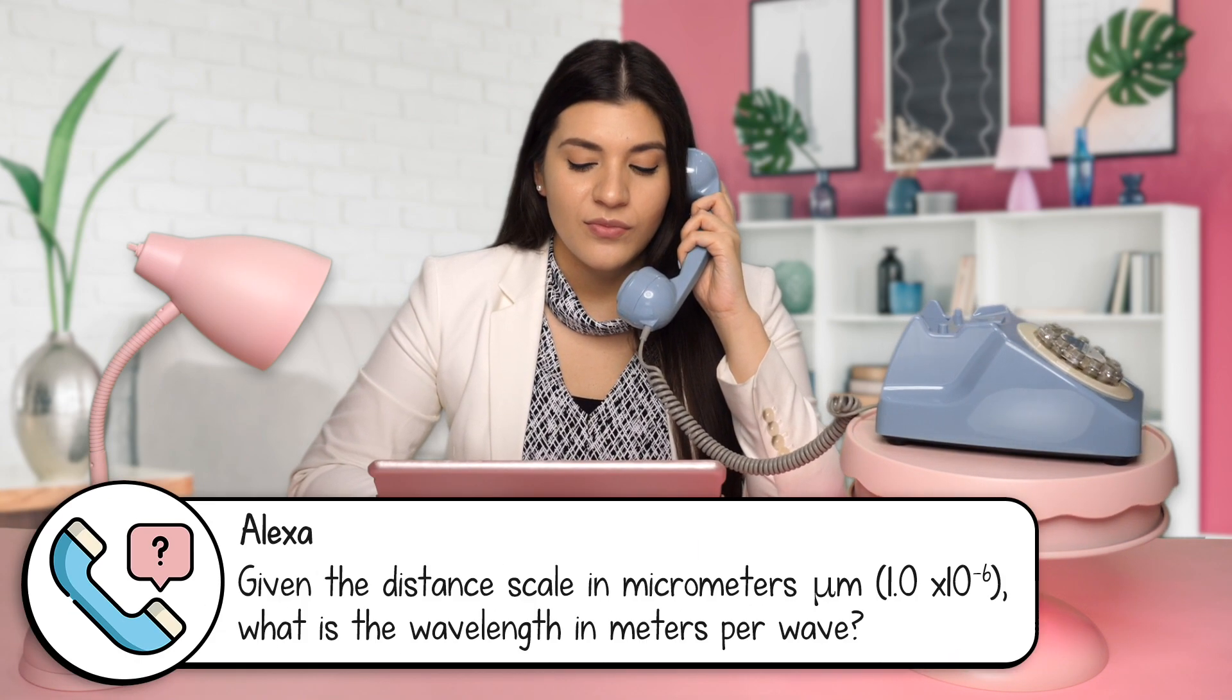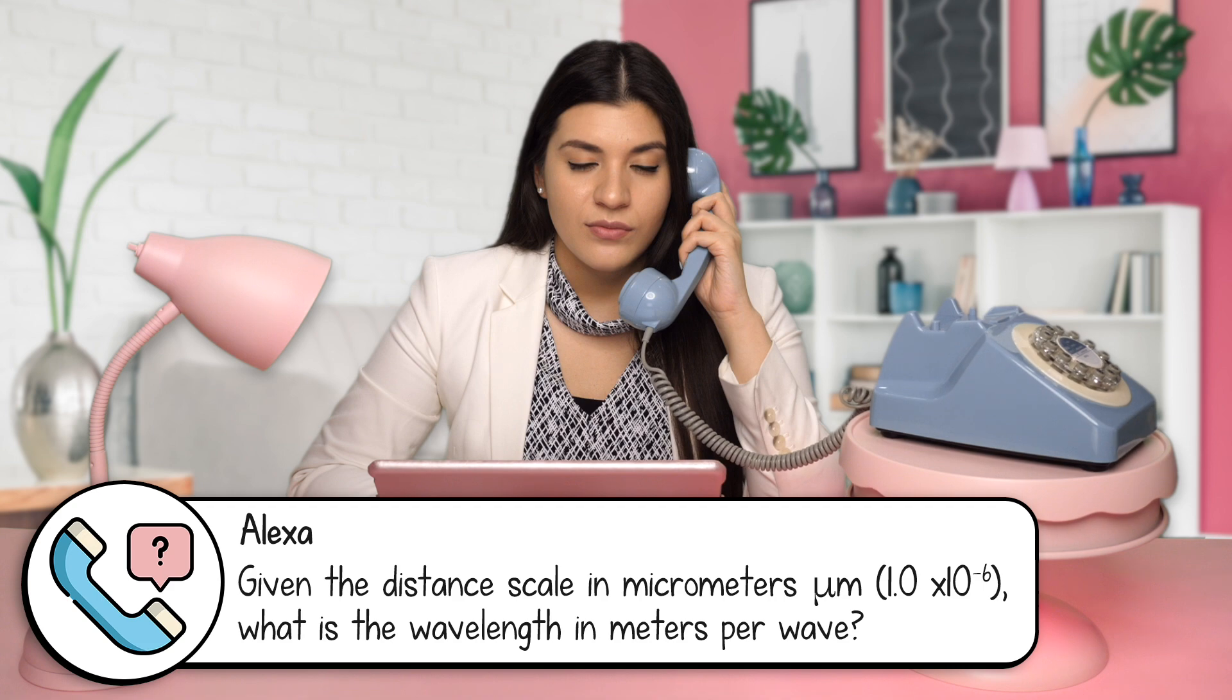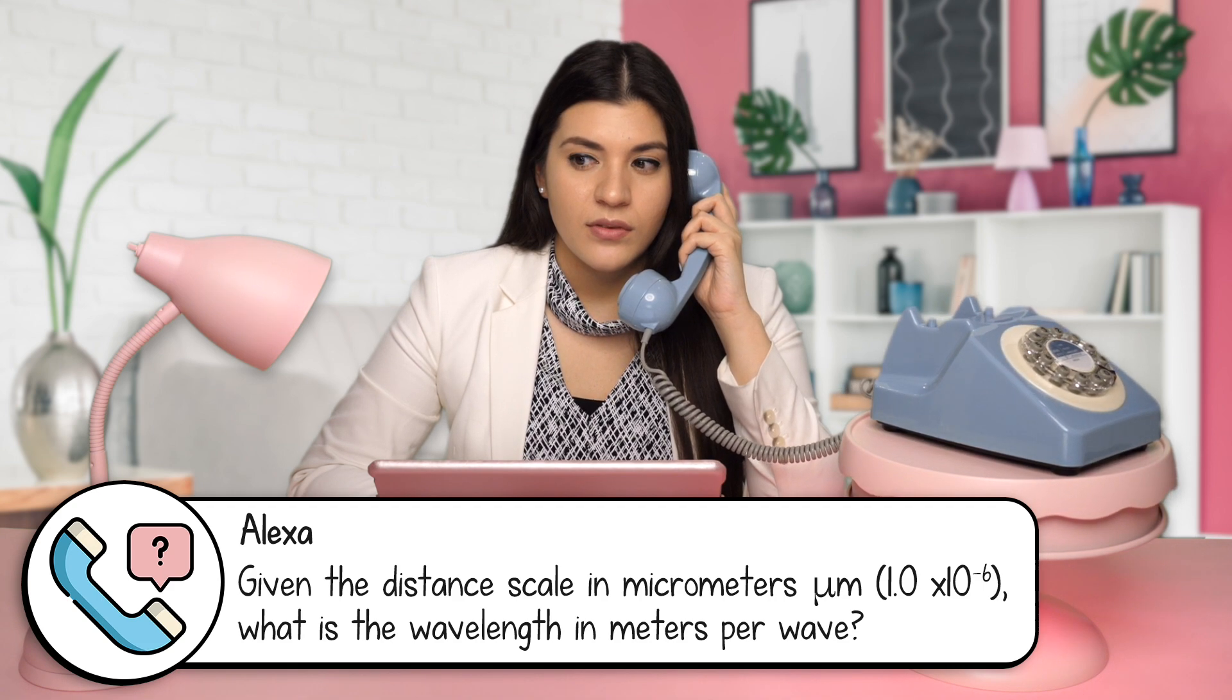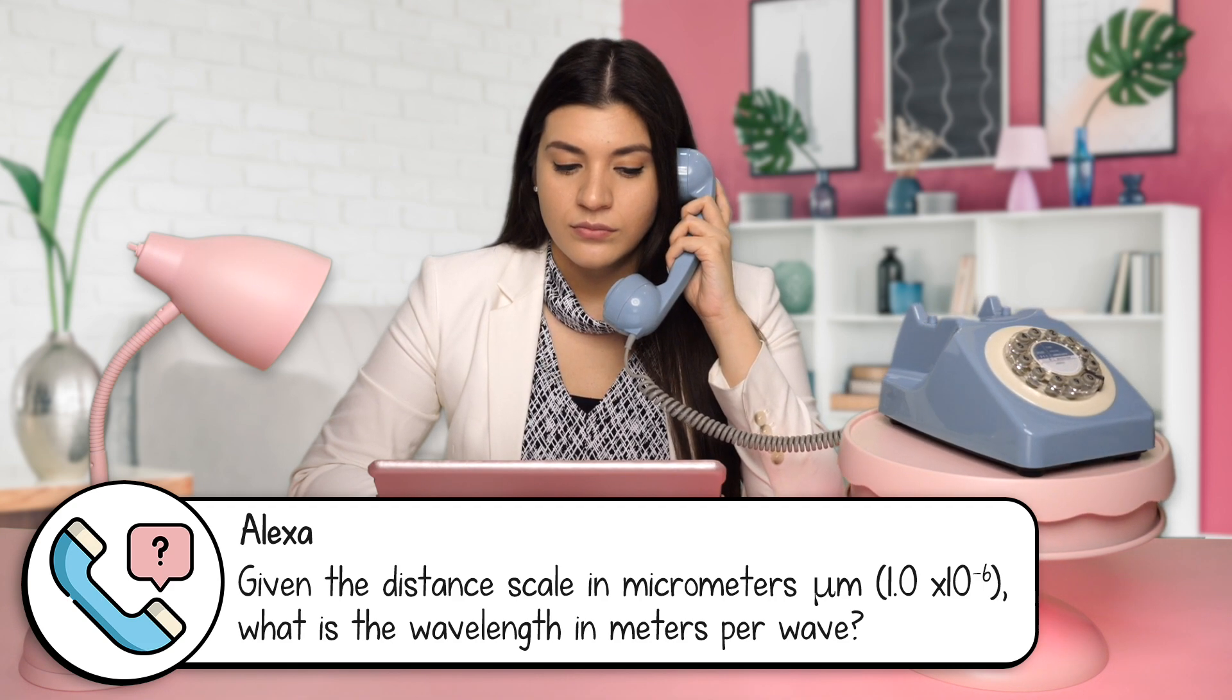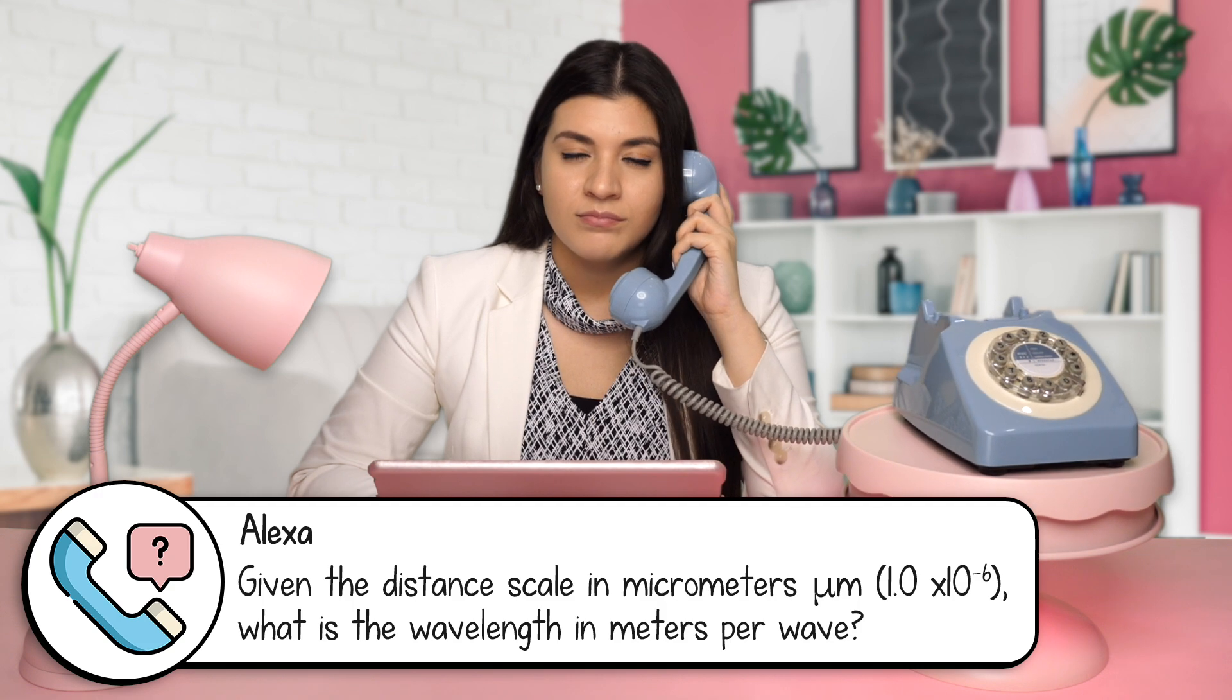Going with the first question here. It says, given the distance scale in micrometers, 1 times 10 to the negative 6 power, shown in the figure, what is the wavelength in meters per wave? 5 times 10 to the negative 7. Let's go over that.